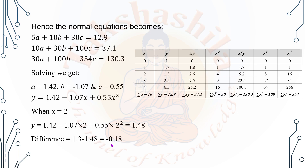So what is the difference? 1.3 minus 1.48 is equal to minus 0.18. Obviously, we have to do an approximation. We have to say that the approximation is not 100% accurate. This is the same for the given data.